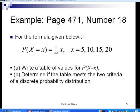All right. In slide number four, we have an example of a probability mass function. For the formula given below, notice what we have here. The probability mass function is the probability that x takes on the values of x is 1 over 55 times x. So here's our probability mass function, and then the values of our random variable are 5, 10, 15, and 20. So we want to make a table of the values for the probability distribution, and then we want to determine if the table meets the two criteria of a probability distribution.